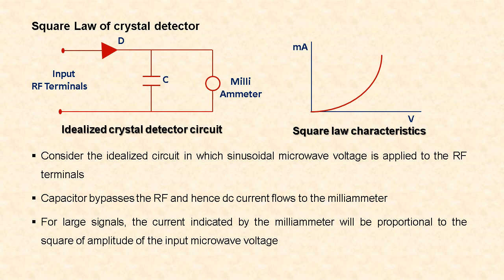For extremely small signals, the current is simply proportional to the applied voltage and the crystal behaves as a simple resistor with negligible DC current flowing through the milliammeter. However, for somewhat larger signals, the second harmonic term must be included in the current component.